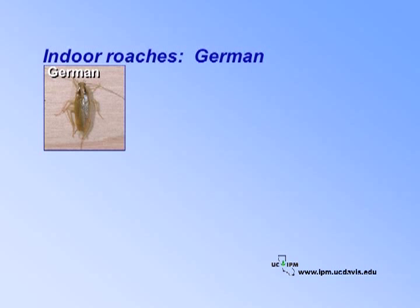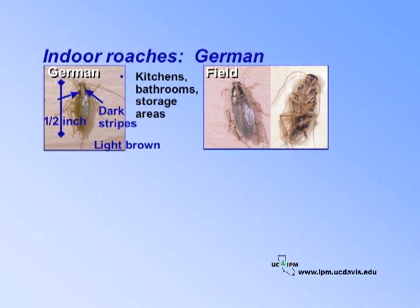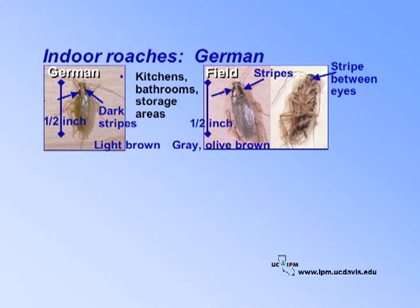The German cockroach is the most common indoor roach found in schools. It has a very high reproductive rate, develops rapidly, and prefers humid indoor locations. It is about half an inch in length and light brown, with two dark stripes on the shield-shaped section behind the head. German roaches are found in kitchens, bathrooms, and storage areas, often near water sources or refrigerators. Field roaches are not really pests, but come indoors when it is hot and dry, and can be mistaken for German roaches. They are half an inch long, gray to olive brown, with two black stripes on the shield behind the head. A black stripe between the eyes distinguishes them from German cockroaches. Field roaches are usually found outdoors in leaf litter and plant debris.